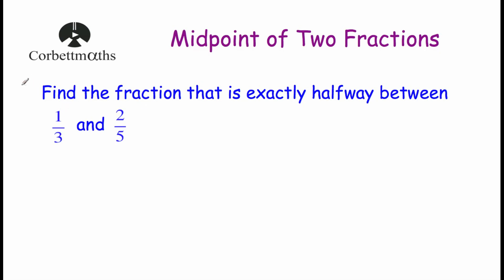So our first question says: find the fraction that is exactly halfway between one-third and two-fifths. If we want to add these two fractions together to begin with, we're going to add one-third plus two-fifths.